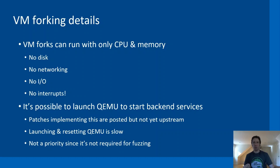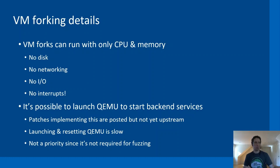Another nice thing about VM forks is that we can run them with only CPU and memory. That means we don't need to spin up QEMU to emulate backend devices like disks or network devices, which speeds things up significantly. Starting up QEMU can be quite slow and it doesn't have a reset function right now, so not needing to start QEMU is a performance benefit. Furthermore, with no devices, we can also disable interrupts for fork VMs, making execution much more deterministic.